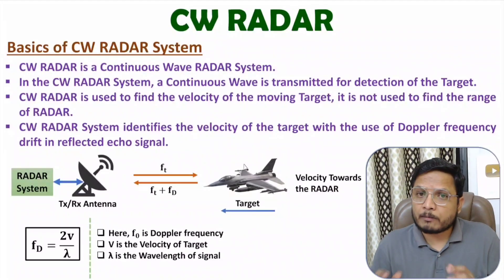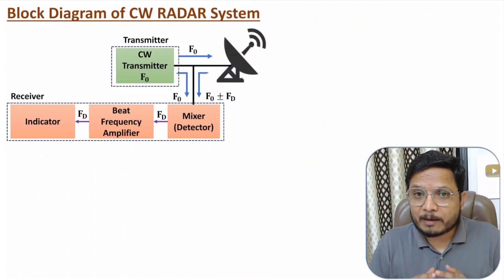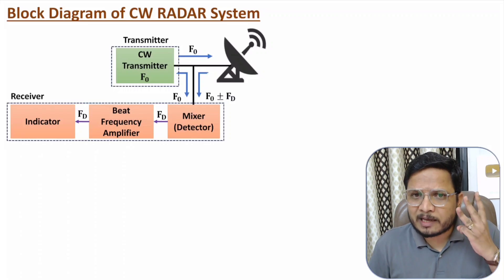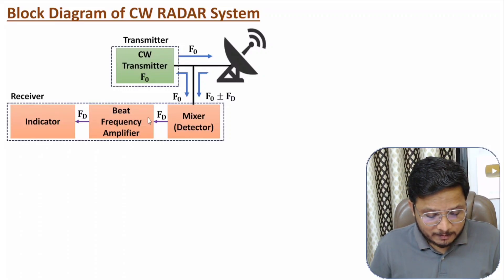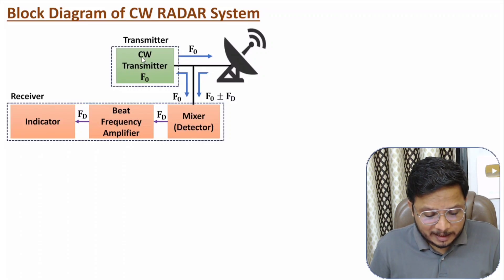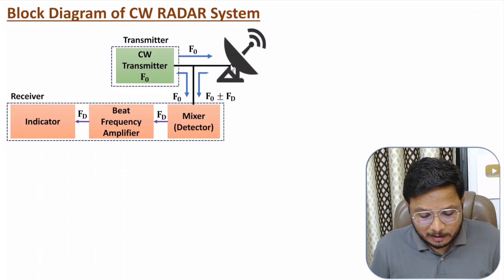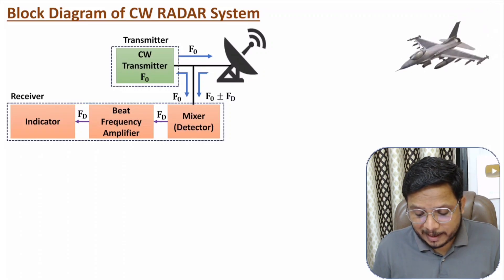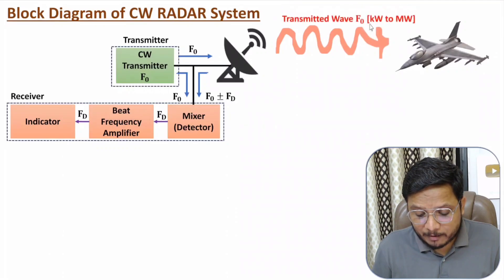Now I will explain the block diagram of the CW radar system. It is quite simple, with three major elements: transmitter, receiver, and antenna. In the transmitter, we have a continuous wave transmitter generating a signal with frequency F0, which is given to the antenna. The echo signal received is then passed to the receiver. The antenna transmits a high-power signal with frequency F0 — that power could be in terms of kilowatts to megawatts.